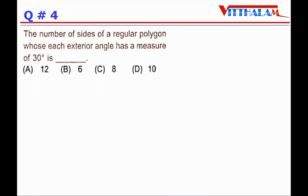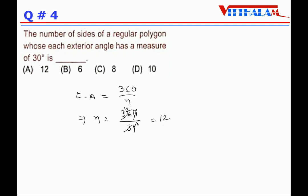The number of sides of a regular polygon whose each exterior angle has a measure of 30° is: using n = 360°/exterior angle = 360°/30° = 12. So n = 12, which is option A.